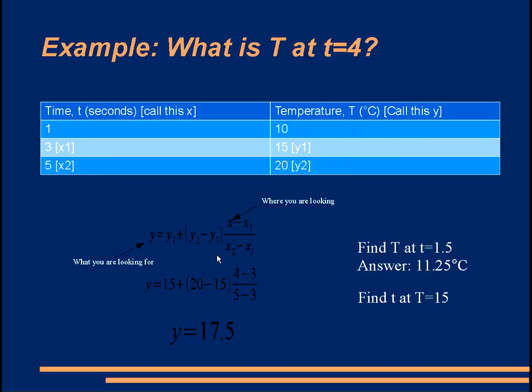substituting the formula as before, obviously we know from the table that T equals 15 occurs at t equals 3. You can check your substitution and that you understand the method by doing this question here.